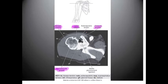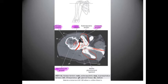This CT image is slightly lower than the previous one. We can identify the coracoid process, scapular spine, scapular body, glenohumeral joint, glenoid process, and humeral head. Near the anatomic neck, we identify the lesser tubercle and greater tubercle. The small indentation between them is the intertubercular groove, also called the bicipital groove.